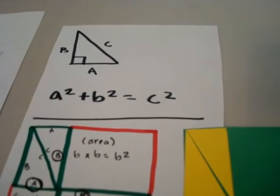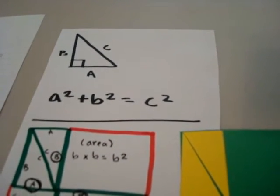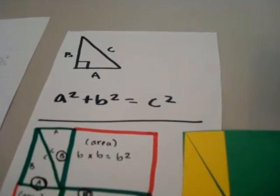In school, we learn about the Pythagorean Theorem: A squared plus B squared equals C squared. But how can we prove that's true?